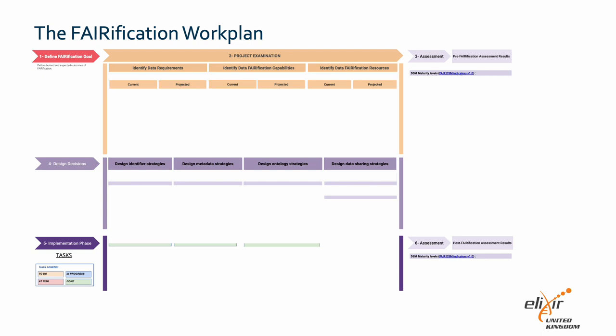After completing a verification cycle, the outcomes of the post-verification assessment are recorded in section six, located at the bottom right corner. If more than one verification cycle is performed, a new version of the work plan should be produced for each cycle, in particular if there are changes in sections four and five.